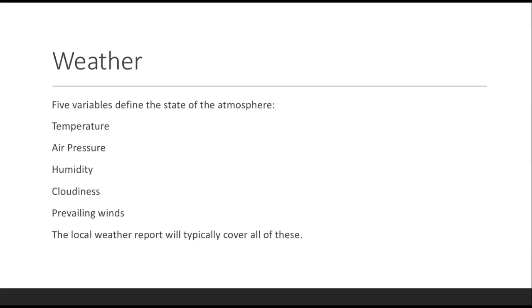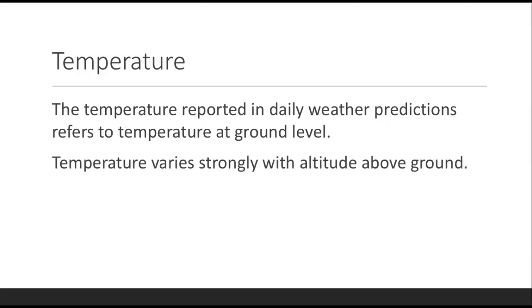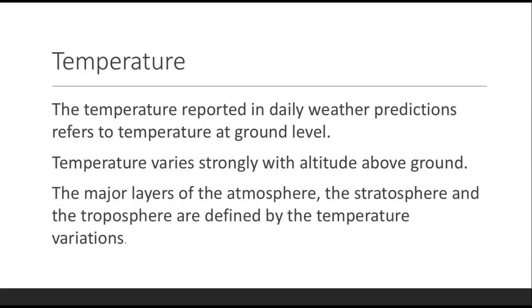The local weather report is typically going to cover all of these. Starting with temperature — the temperature reported in daily weather predictions always refers to the temperature at ground level, because temperature varies strongly with altitude above the ground. The major layers of the atmosphere, for example the stratosphere and the troposphere, are actually defined by their temperature variations. The higher you go up into the atmosphere, the colder it gets.